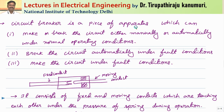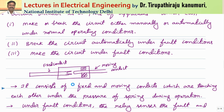Coming to the circuit breaker: a circuit breaker is a piece of apparatus which can make or break the circuit either manually or automatically under normal operating conditions as well as under fault conditions. It should automatically detect the fault and isolate the circuit under fault conditions, and it should also be able to make the circuit under fault conditions. Generally, in order to maintain the continuity of supply in power systems, we go for automatic reclosers. Whenever your circuit breaker opens due to some fault, 80 percent of faults that happen in transmission lines are transient faults — meaning they will die out within a fraction of a second. So there is no need to go and check them; we can reclose our circuit breaker automatically. But the remaining 20 percent of faults may be permanent faults, meaning when you are closing your circuit breaker you are closing under fault conditions, so your circuit breaker should be able to withstand that high value of current when the circuit is closed, and similarly it should be able to open under high values of fault currents.